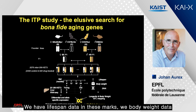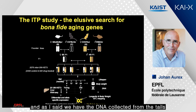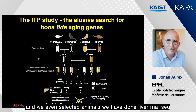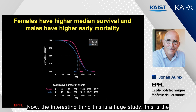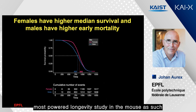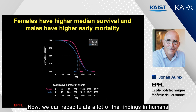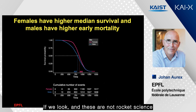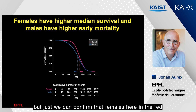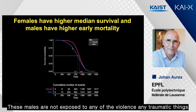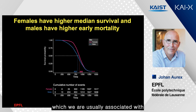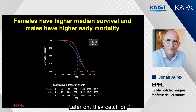We have lifespan data, body weight data, and DNA collected from the tails. In selected animals we also performed liver RNA-seq. This is the most-powered longevity study in the mouse, allowing us to recapitulate a lot of findings in humans. We can confirm that females in red have lower early death rates than males — these males are not exposed to violence or trauma normally associated with shorter lives — and we see this very significant difference in early survival in females, which later converges.